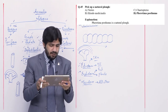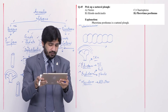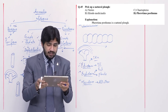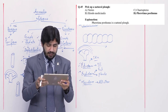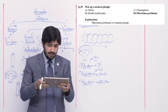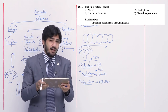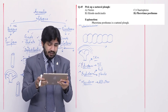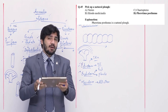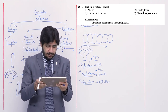Question number 45: pick up a natural fluff — alpha Nereis, beta Hirudinea medicinalis, charlie Chaetopteris, and delta Pheretima posthuma. Pheretima posthuma is called earthworm, and earthworm is a natural fluff. Right option is delta.